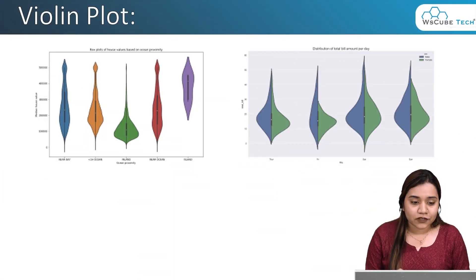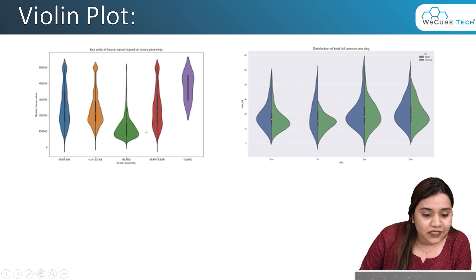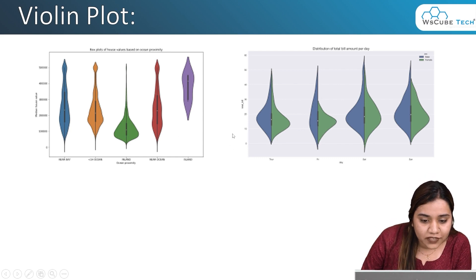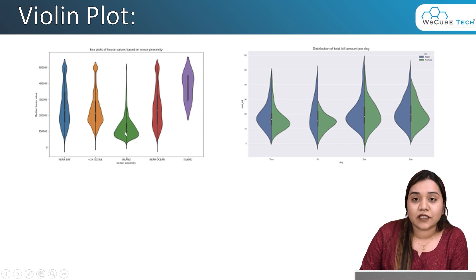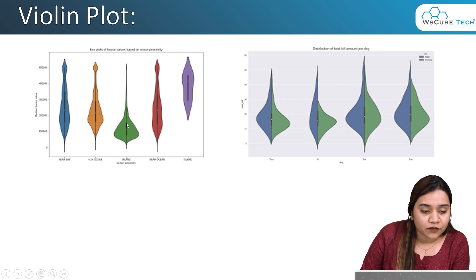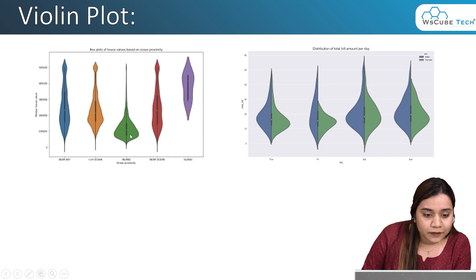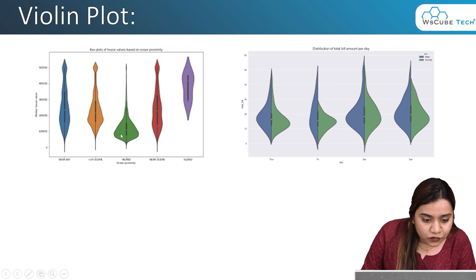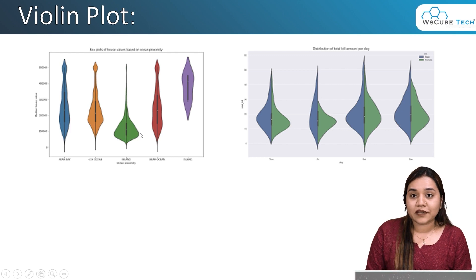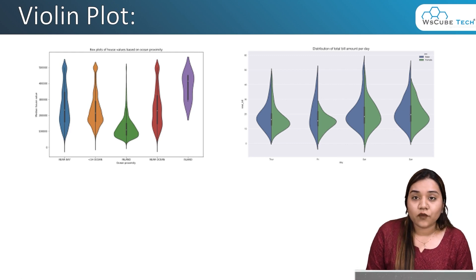Hello everyone, a very warm welcome to WS Cube Tech. In our previous session we covered the count plot, and in today's session we will be talking about the violin plot. As the name says, it actually looks like a violin. You can see a small dot in the middle which is the median value. On the top we have the first quartile, at the bottom the third quartile, and the width indicates where the distribution is more concentrated.